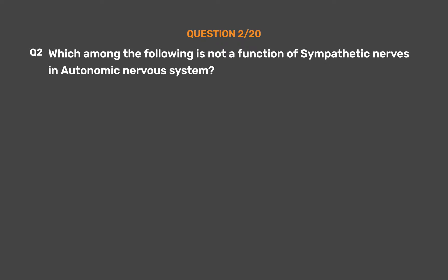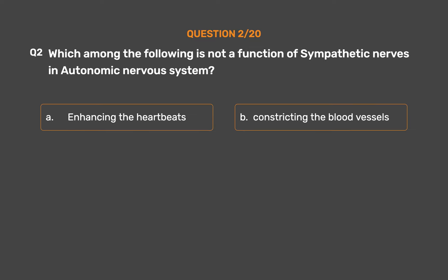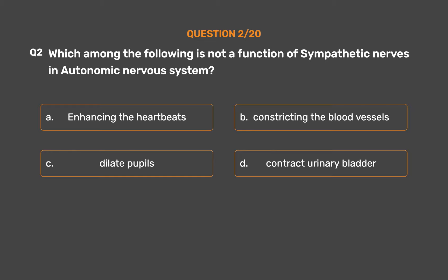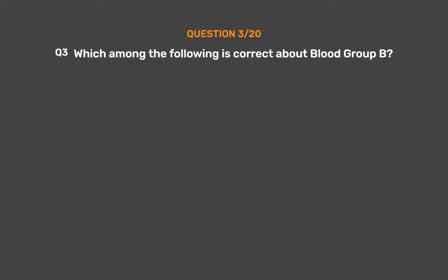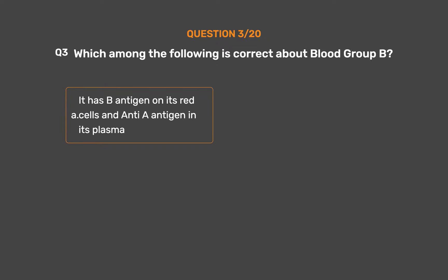Question number two. Which among the following is not a function of sympathetic nerves in the autonomic nervous system? Option A: Enhancing the heartbeats. Option B: Constricting the blood vessels. Option C: Dilate pupils. Option D: Contract urinary bladder. The correct answer is Option D: Contract urinary bladder.